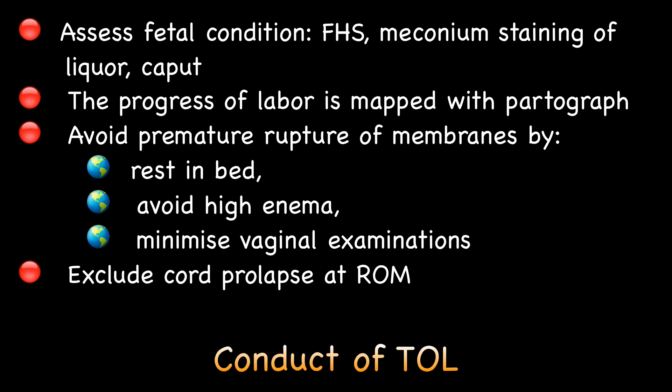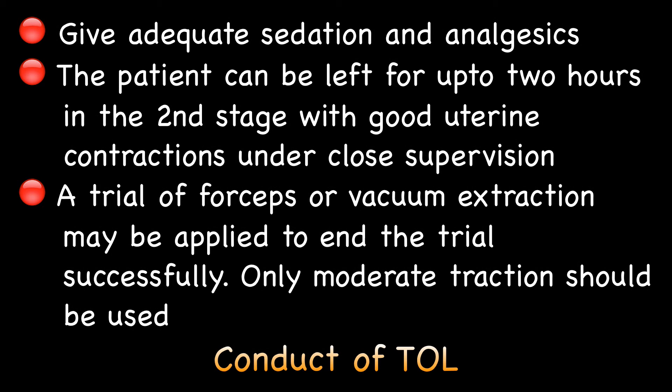The progress of labor can be mapped with a partogram. Avoid premature rupture of membranes by rest in bed, avoiding high enema, and minimizing vaginal examinations. Exclude cord prolapse after rupture of membranes. Give adequate sedation and analgesics. The patient can be left for up to 2 hours in the second stage of labor in the presence of good uterine contractions, under close supervision of the mother and the fetus.